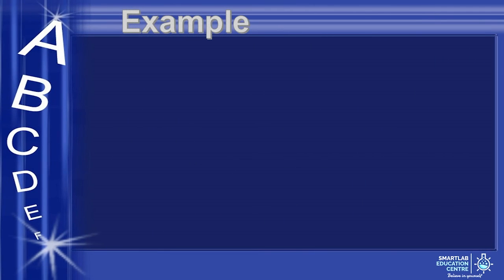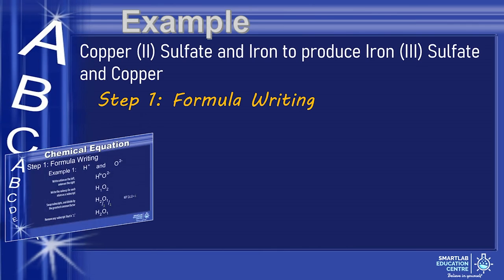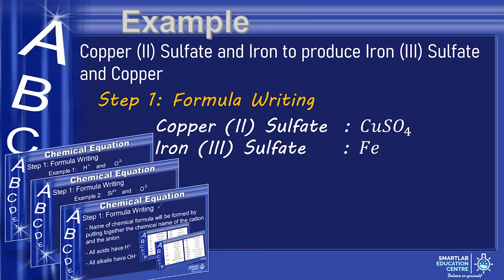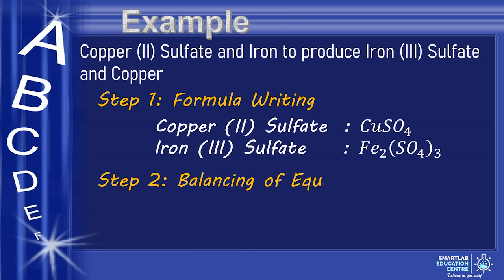Let's take a look at an example. Copper 2 sulfate and iron to produce iron 3 sulfate and copper. Step 1, Formula writing. We have learned this in the previous slides. Please rewind to review if needed. Step 2, Balancing of equation.